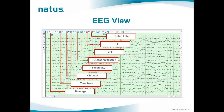The EEG view displays the EEG montage with the opportunity to change it and modify visualization parameters like filters, sensitivity, and time base, as commonly used in any EEG program. Users also have the opportunity to enable the artifact reduction option, which detects and reduces artifacts caused by EMG, electrodes, and high movement, resulting in a much cleaner EEG. The original signal is always shown in the background in a gray color, allowing you to see what has been changed.